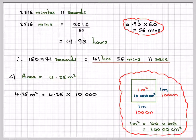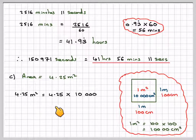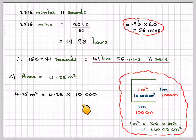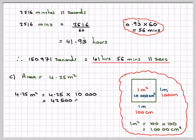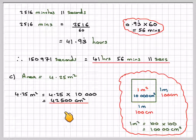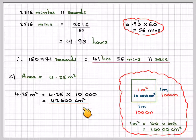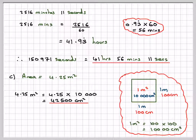So 4.25 metres squared is going to be 4.25 times 10,000, because that's the conversion rate, which gives me 42,500 centimetres squared.